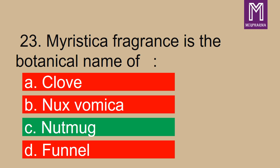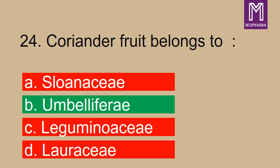Next, Myristica fragrans is the botanical name of? Correct answer: option C, nutmeg. Question number 24: coriander fruit belongs to? Correct answer: option B, umbelliferous.